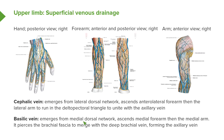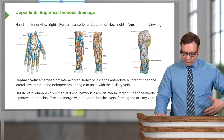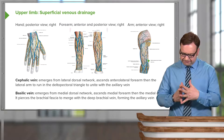The basilic vein emerges from the medial dorsal network and ascends the medial forearm, then enters the medial aspect of the arm. It runs all the way up, pierces the brachial fascia, and then actually unites with the deep brachial vein to form the axillary vein. So the brachial vein, running alongside the brachial artery from deep, receives the basilic vein, and these two veins uniting form the axillary vein.